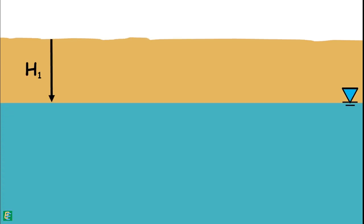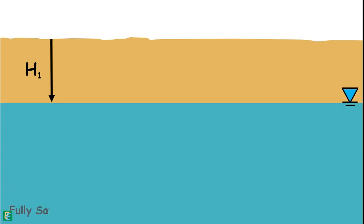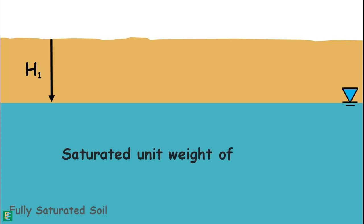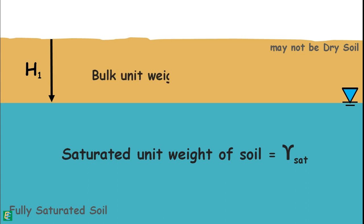Let's consider this soil mass in which the position of the water table is H1 depth below the ground surface. Soil below the ground water table is fully saturated and has unit weight gamma saturation, while soil above the water table may not be completely dry, hence its unit weight is considered bulk unit weight gamma.